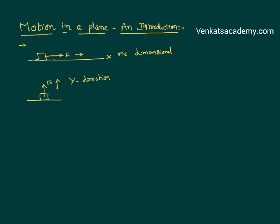Now let us consider a new scenario. I am having a body and I am now applying a force — throwing the body with an initial velocity u. It is very clear from the diagram that I am not moving it only along the x-direction or only along the y-direction. I have given an initial velocity u in such a way that it is in between the x-axis and the y-axis. So it is not going to move only along x or only along y — we are going to prove that it is going to take a parabolic path.